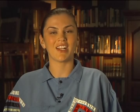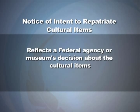Next, we'll talk about the other Federal Register notice, which is called a Notice of Intent to Repatriate Cultural Items. This notice also results from consultation with tribes and acknowledges the rights of the listed tribes to repatriate cultural items. Like a notice of inventory completion, it reflects a federal agency or museum's decision about the cultural items.